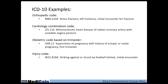A few more examples: the orthopedic code M84 is disorder of bone — here we have a stress fracture, location left humerus, and this is an initial encounter for a fracture, designated A. For cardiology, I25.110 is atherosclerotic heart disease of a native coronary artery — differentiating from a vein graft — associated with unstable angina. For an obstetric code, O09.11 is supervision of pregnancy with a history of ectopic or molar pregnancy in the first trimester. And an injury code can get as specific as noting the injury occurred by striking against a football helmet at an initial encounter.